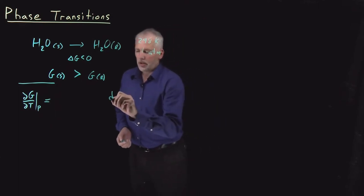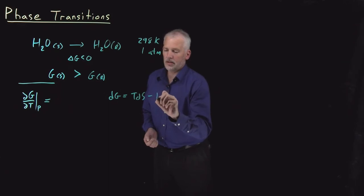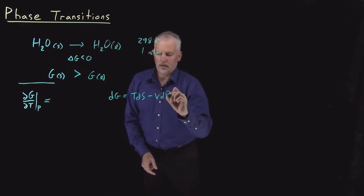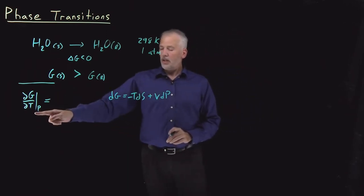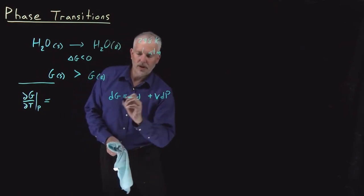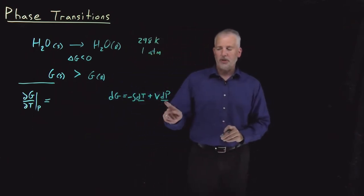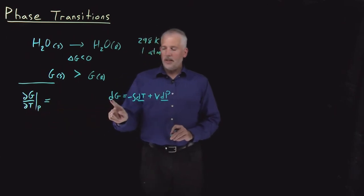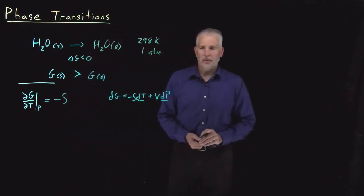The thermodynamic relationship we need is the fundamental equation for the Gibbs free energy. The correct form is dG = -S dT + V dP. The natural variables for Gibbs free energy are temperature and pressure. This immediately tells us that dG/dT at constant pressure equals negative S.